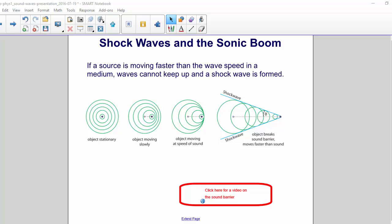So we have four different diagrams here. The first is for an object that is stationary, creating sound. The second, the object is moving slowly, meaning less than the speed of sound. The third, the object is moving at the speed of sound, and you can see the sound waves bunching up.